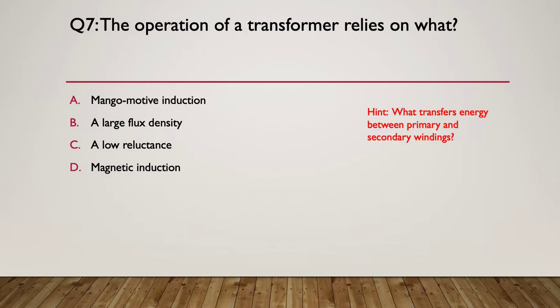Here's your hint: what transfers energy between the primary and secondary windings of a transformer? The answer is magnetic induction. You could argue that B — large flux density — is partially correct, as that's how the energy transfers, but magnetic induction is the complete answer. Saying large flux density is only half an answer, whereas magnetic induction is complete.